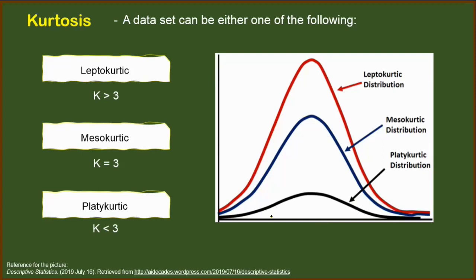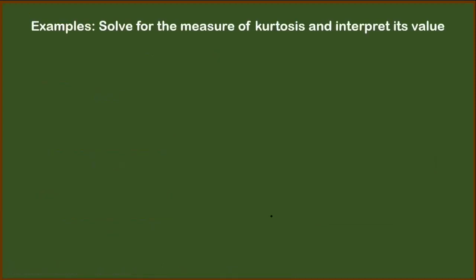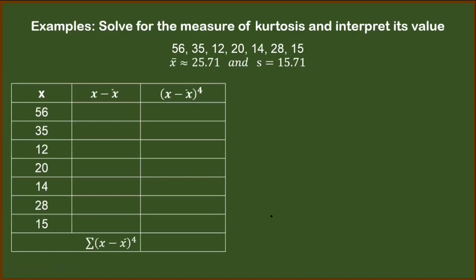To better understand, let's have this example. We have to solve for the kurtosis of this dataset. Previously, we have identified its mean and standard deviation to be 25.71 and 15.71 respectively. So to do that, we need to arrange this in the form of table.